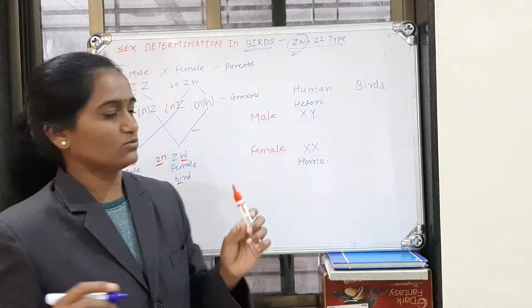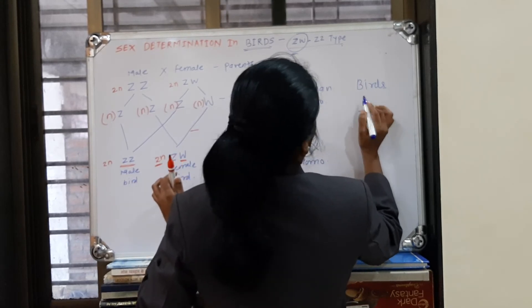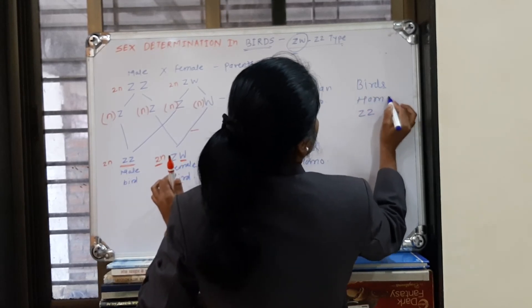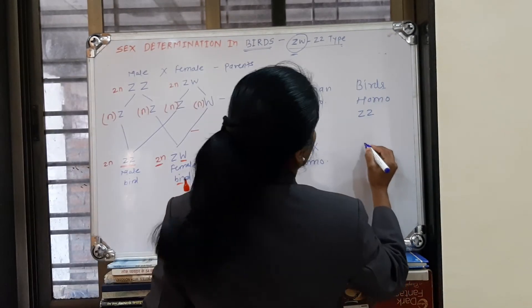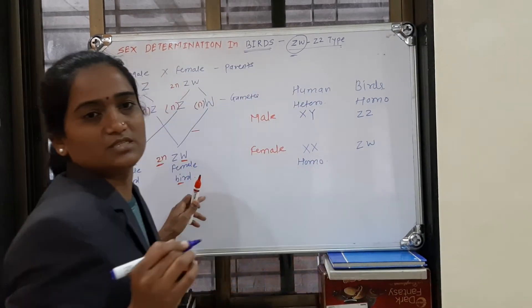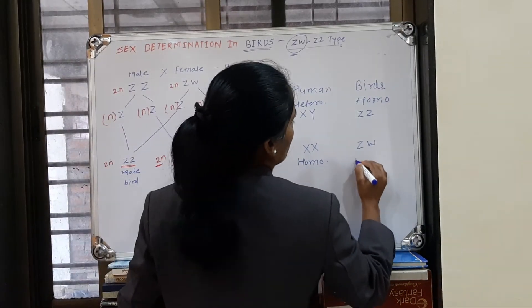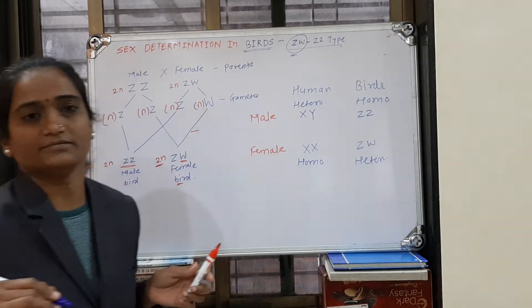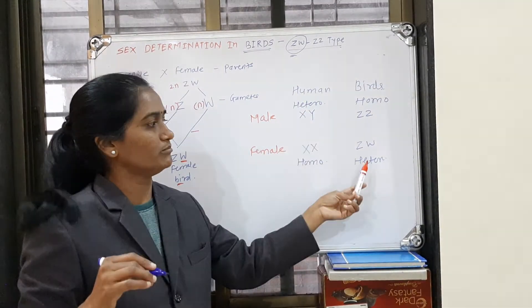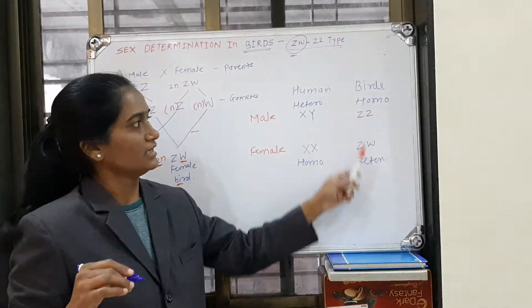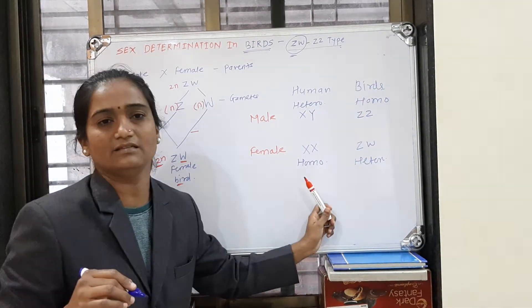In birds, the male has ZZ — both chromosomes the same — so the male bird is homogametic. But the female bird has ZW — two different chromosomes — so the female bird is heterogametic. In summary: in humans, the male is heterogametic and the female is homogametic; in birds, the male is homogametic and the female is heterogametic.